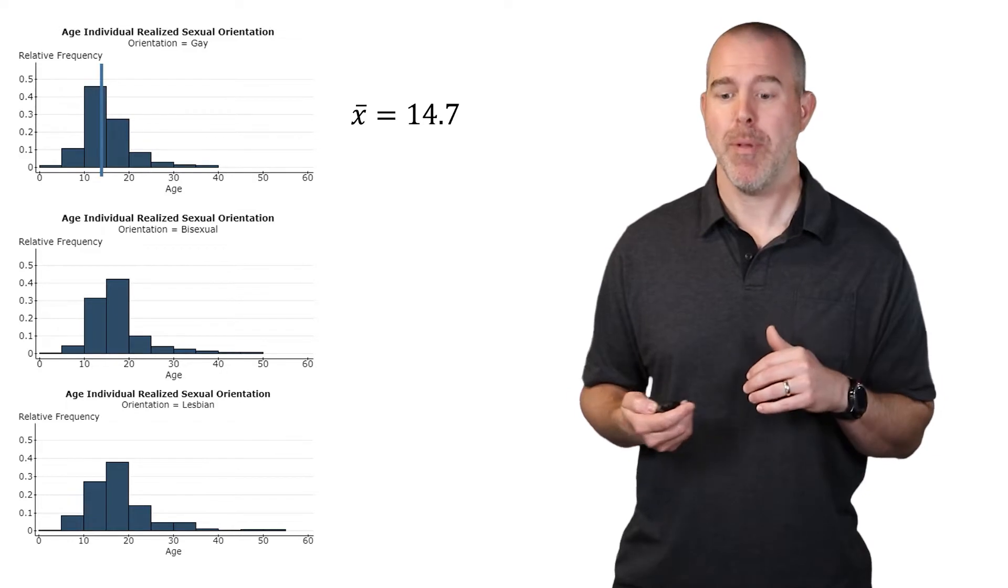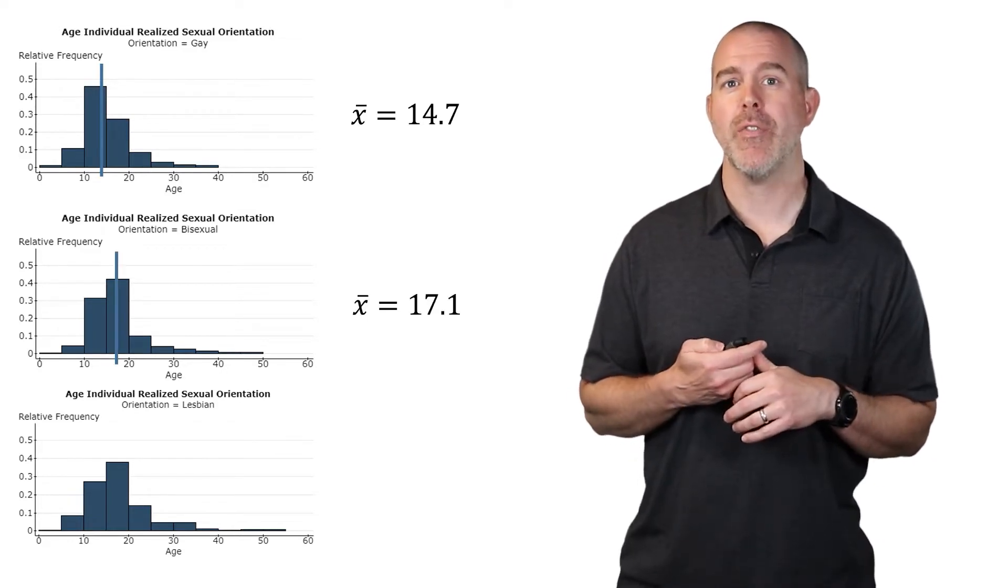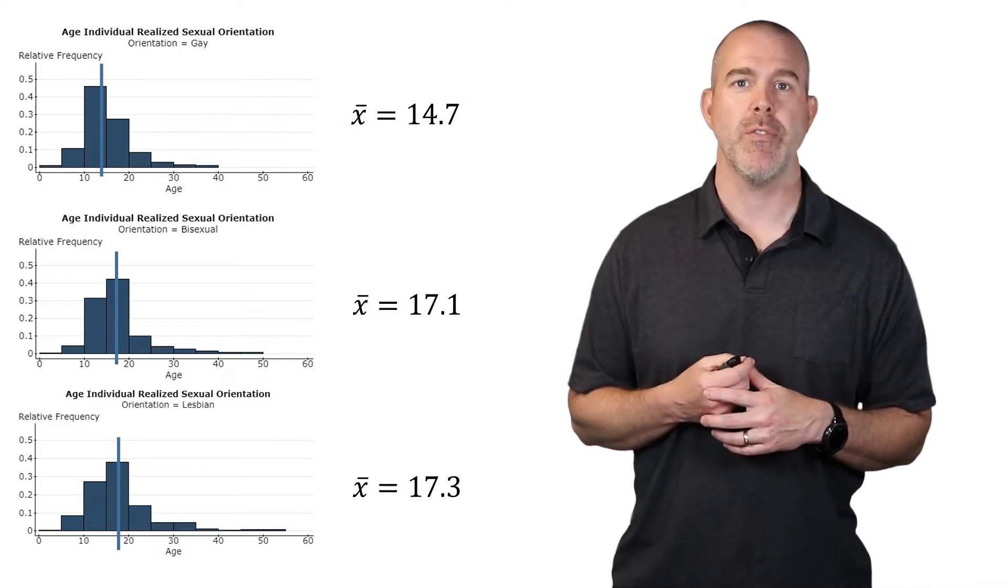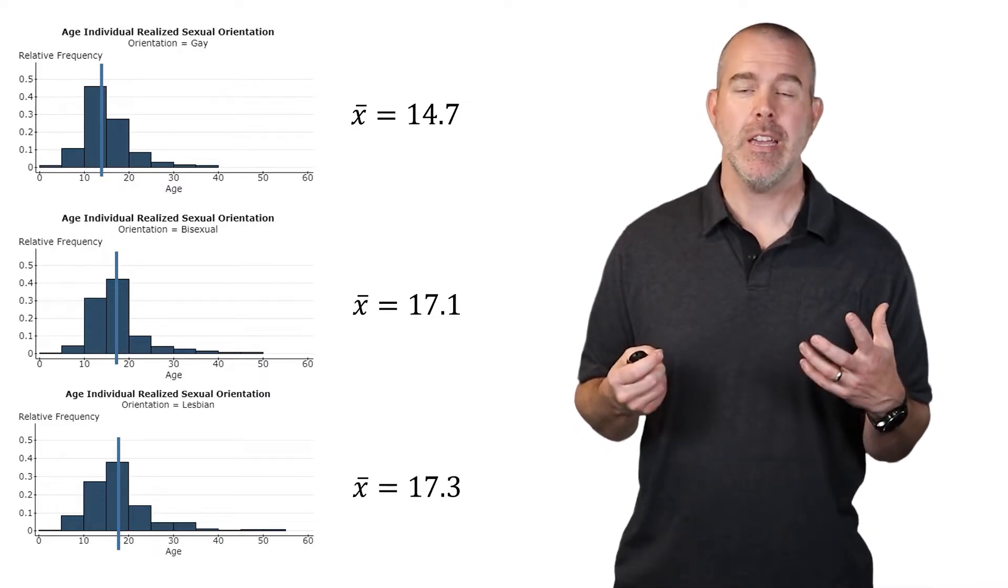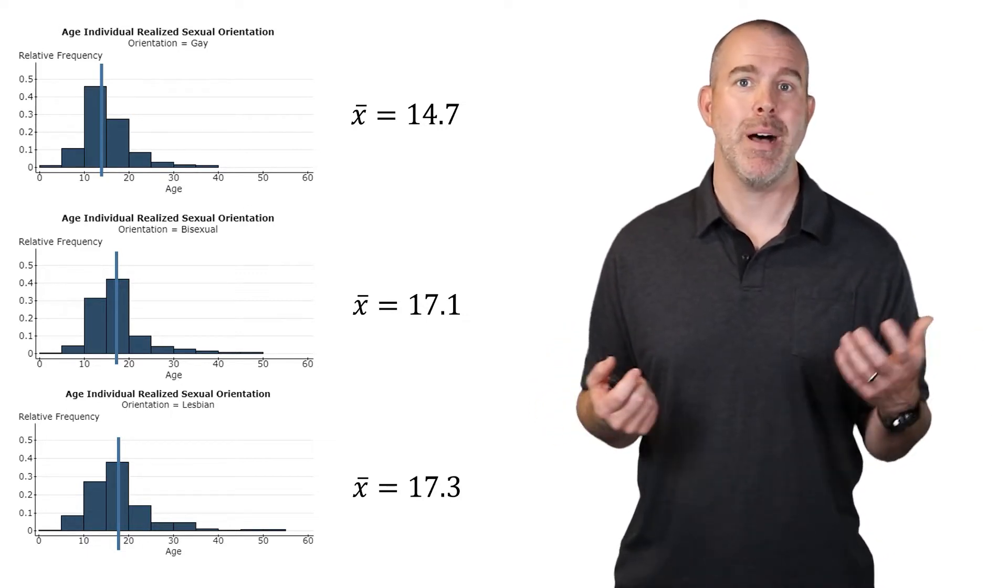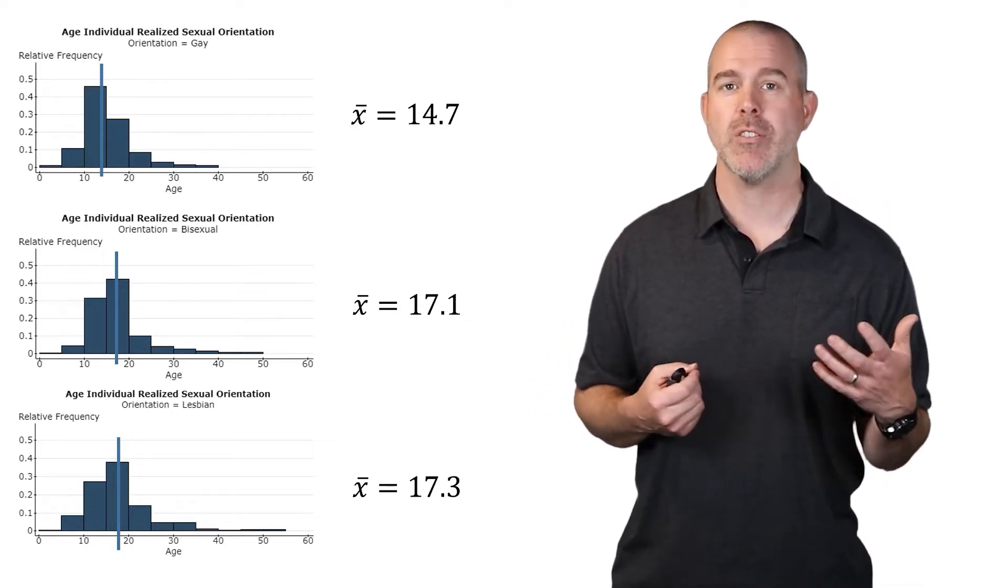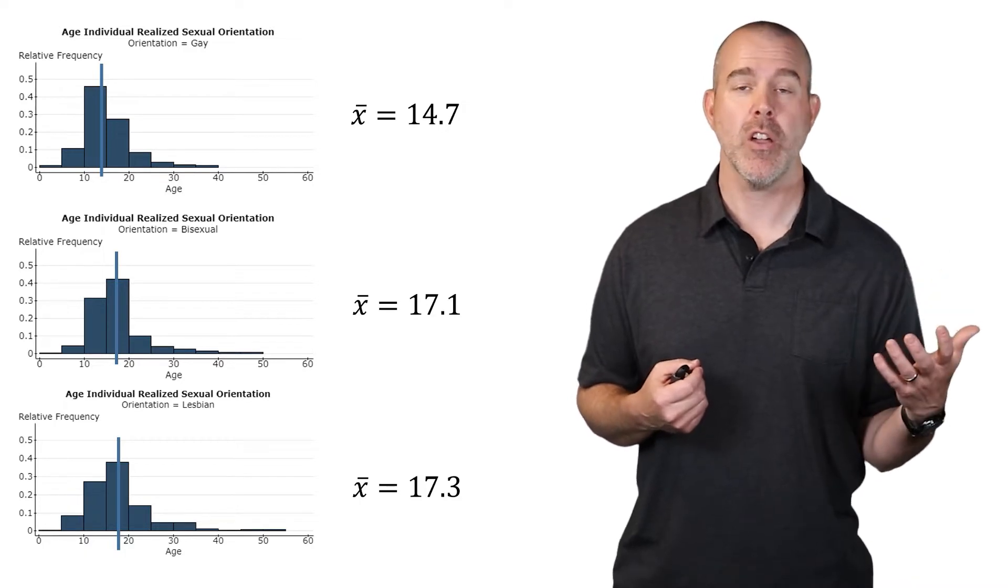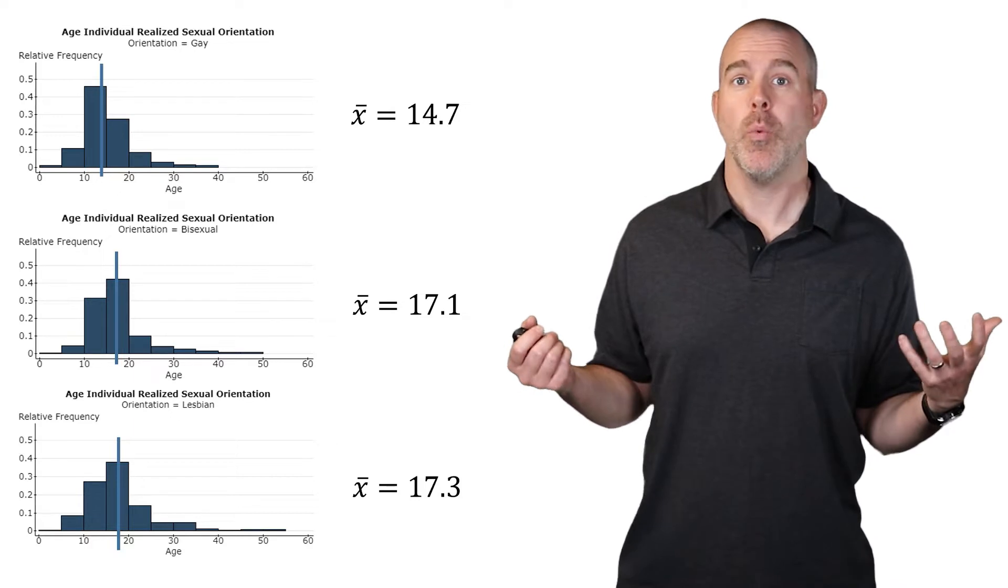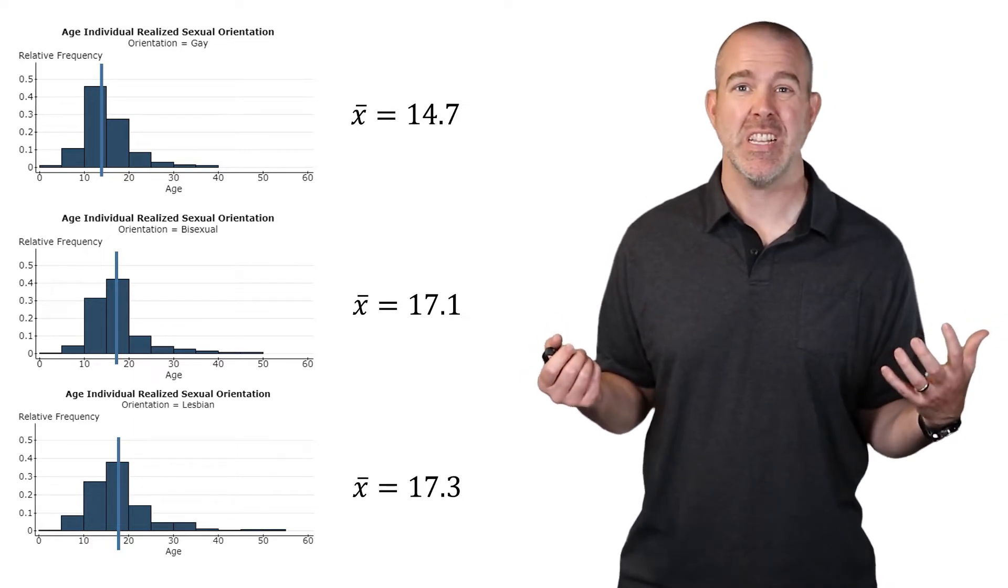We can compute those sample means: we have 14.7 for gay men, 17.1 for bisexuals, and then 17.3 for lesbians. They're clearly different, at least at the sample level. The last two look pretty similar, but it looks like gay men recognize their sexual orientation at a younger age on average. But these are just samples. We don't know if that difference is statistically significant.